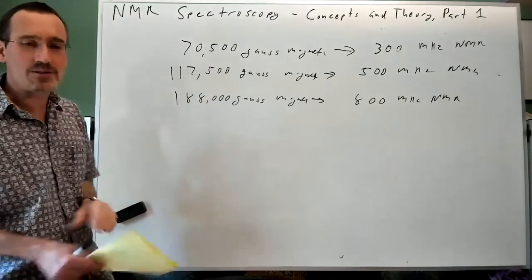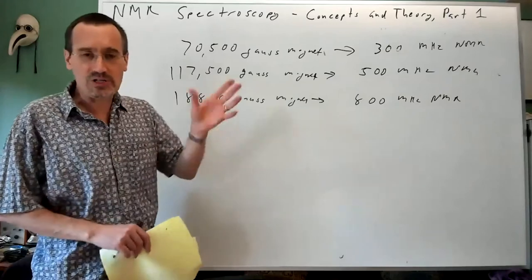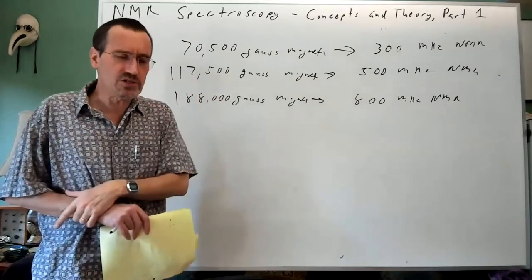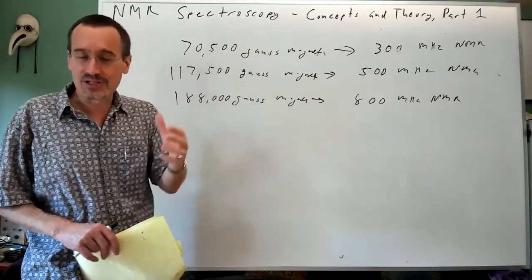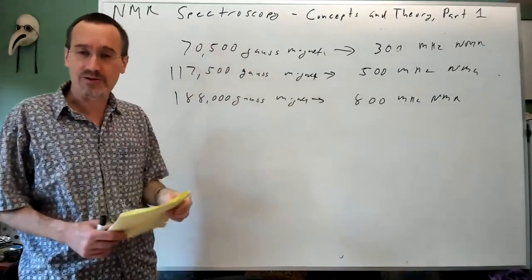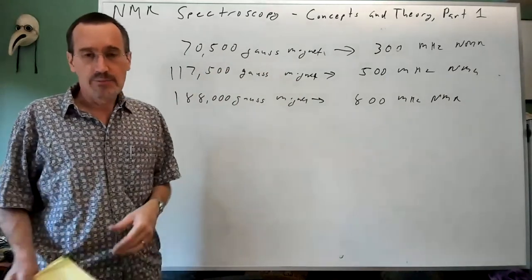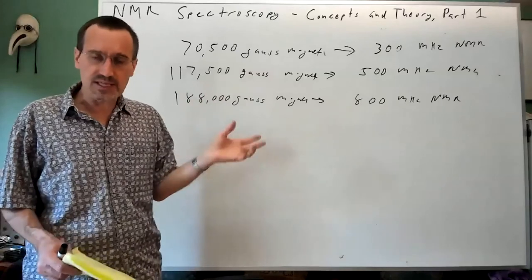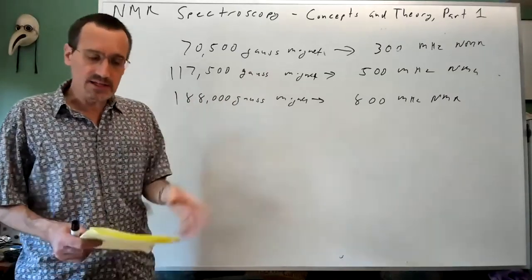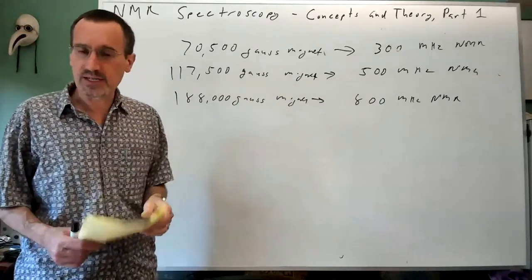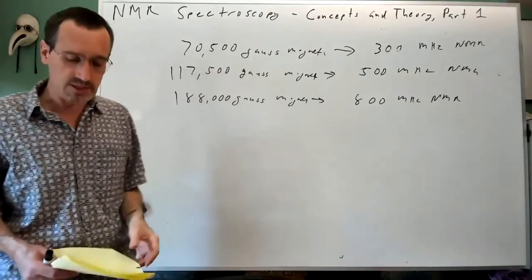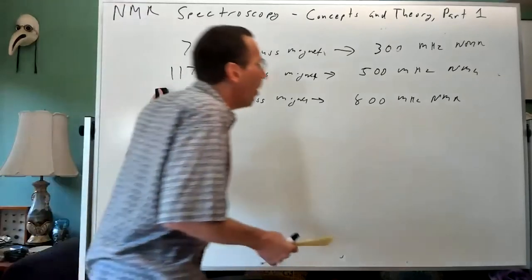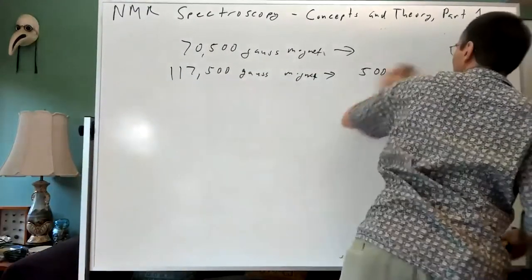NMR spectrometers push the limits of how strong a homogeneous magnetic field you can make. The magnetic field has to be homogeneous so that the sample in the top of your NMR tube experiences the same magnetic field as the sample in the bottom. If you had a non-homogeneous magnetic field, you wouldn't get a peak, you'd get a broad band that would be too bad to see.